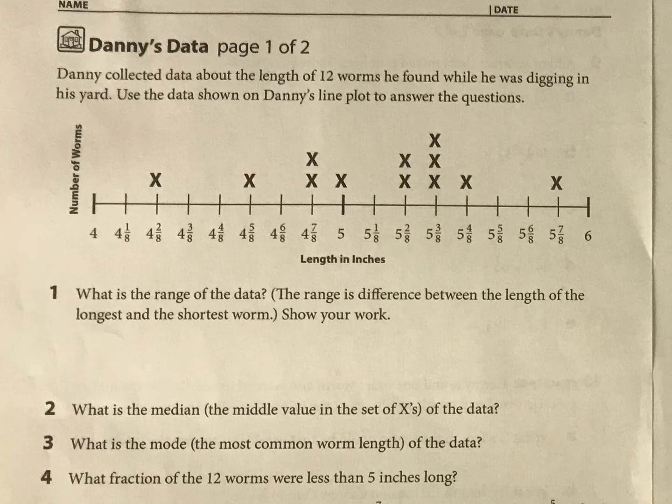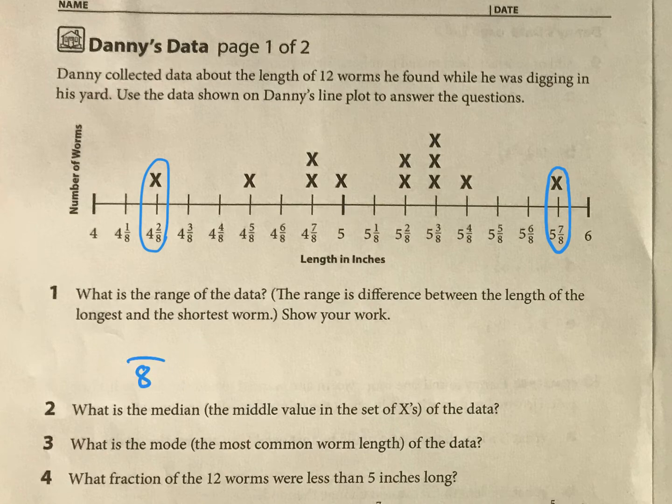So we're going to start with the range of the data. Now please remember, the range is the minimum, which we see here, and the difference between that and the maximum, which is here. So what is the range here? Now I'll show you a couple ways you can do this. The simplest way is to simply count the difference on your number line. So we have eighths here, so that's one-eighth, two-eighths, three, four, five, six—keep counting how many eighths are there.